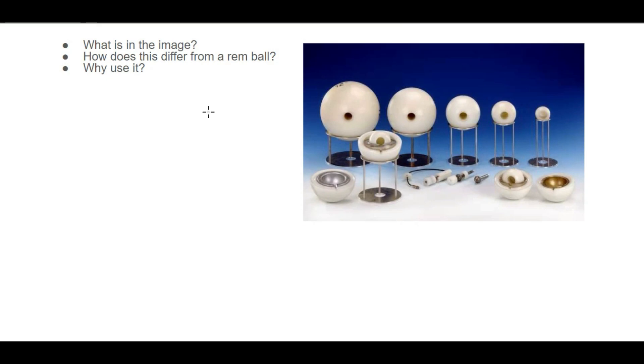First, take a look at the image to the right and tell me what this is, how does it differ from a rim ball, and why use this. The rim ball may clue you in if you didn't already know that this is a Bonner sphere. A Bonner sphere is specifically used to detect neutrons via these various diameters of polyethylene moderating spheres.